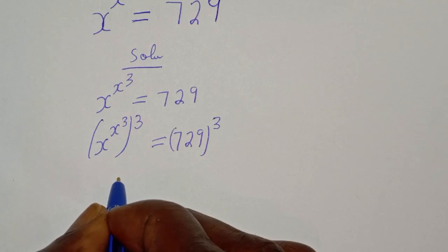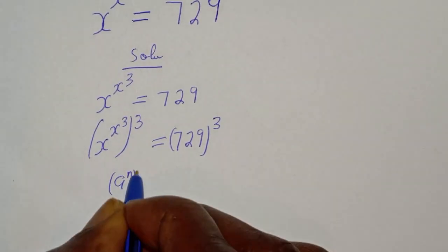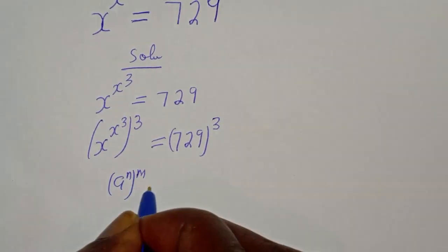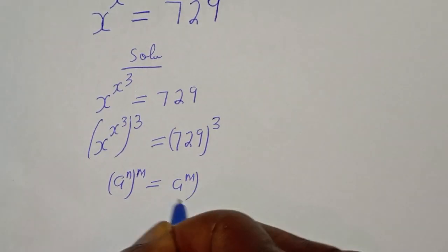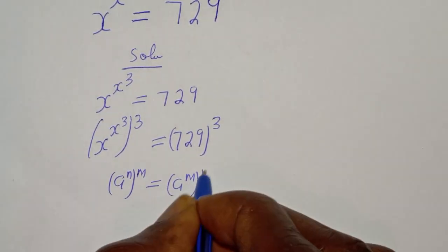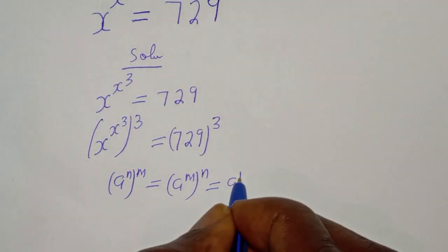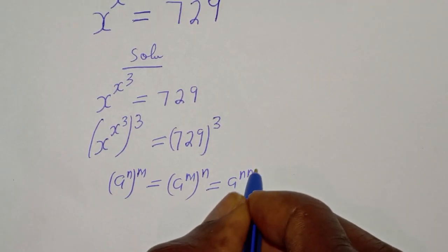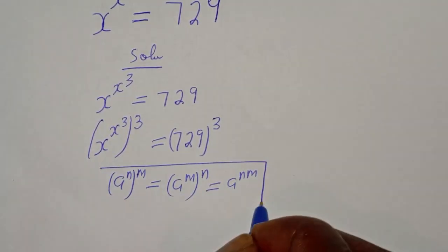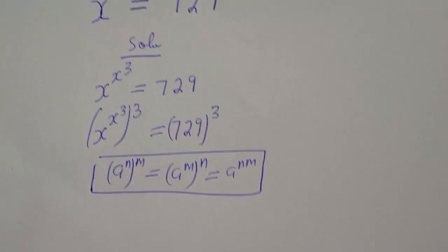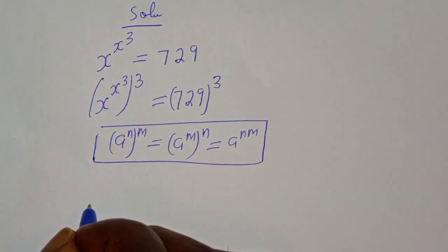Remember this exponential rule: if you have a raised to power n, to the power of m, this is equal to a raised to power n times m.